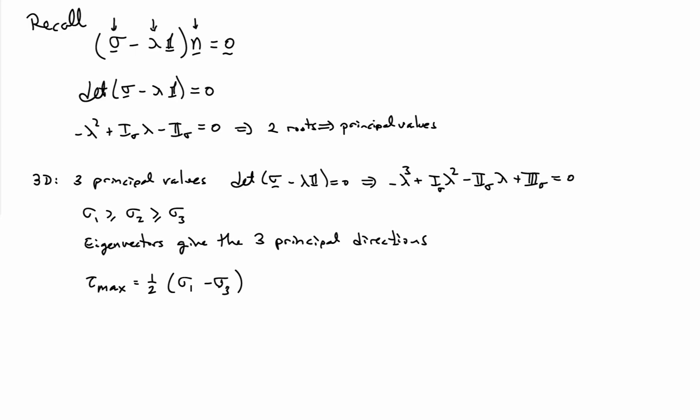Likewise, as with the 2D case, we can also figure out what the maximum shear is. If I take the difference between the max and the minimum principal values, so assuming that they're ordered, divide by 2, that gives me the maximum shear also. So I can calculate maximum normal stresses and maximum shears by computing the eigenvalues of the stress matrix.